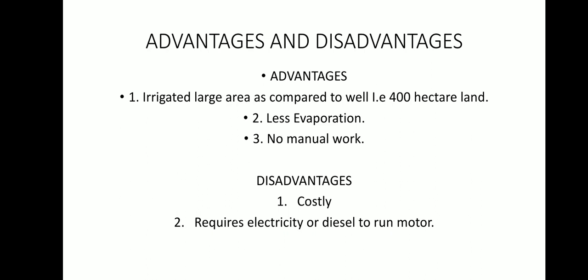Comparing tube wells with wells: a tube well irrigates a larger area of around 400 hectares, while a well irrigates only 100 hectares. Other advantages of tube wells are less evaporation and no manual work required. Disadvantage: it is costly because it requires electricity or diesel to run the motor, which is why it is always installed in a fertile area.